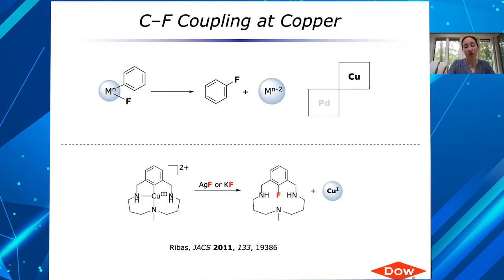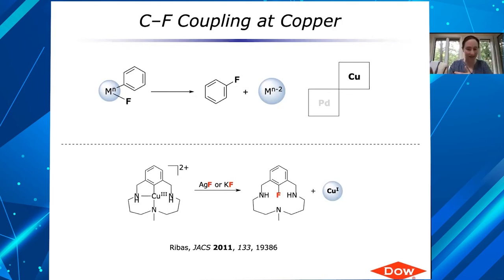One of the cool things about fluorination chemistry is there are so many different applications — large scale like agrochemicals, small scale like radiochemistry — and different approaches to tackle different substrates on different scales with different price points is fine, because you can find an application for almost anything you develop. Certainly an electrophilic approach is a really good approach, particularly for very electron-rich substrates.